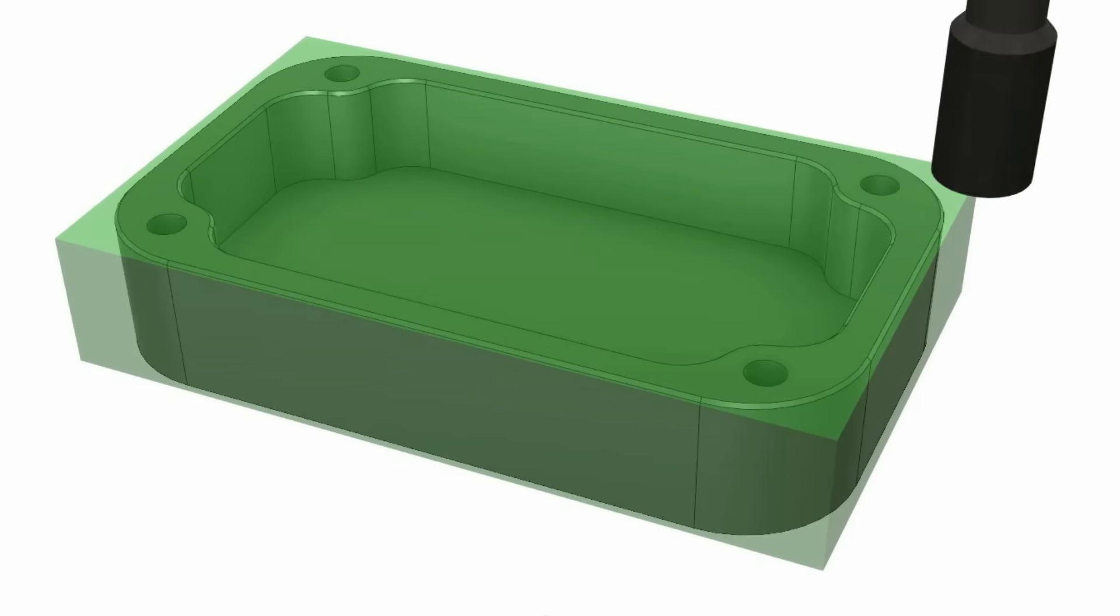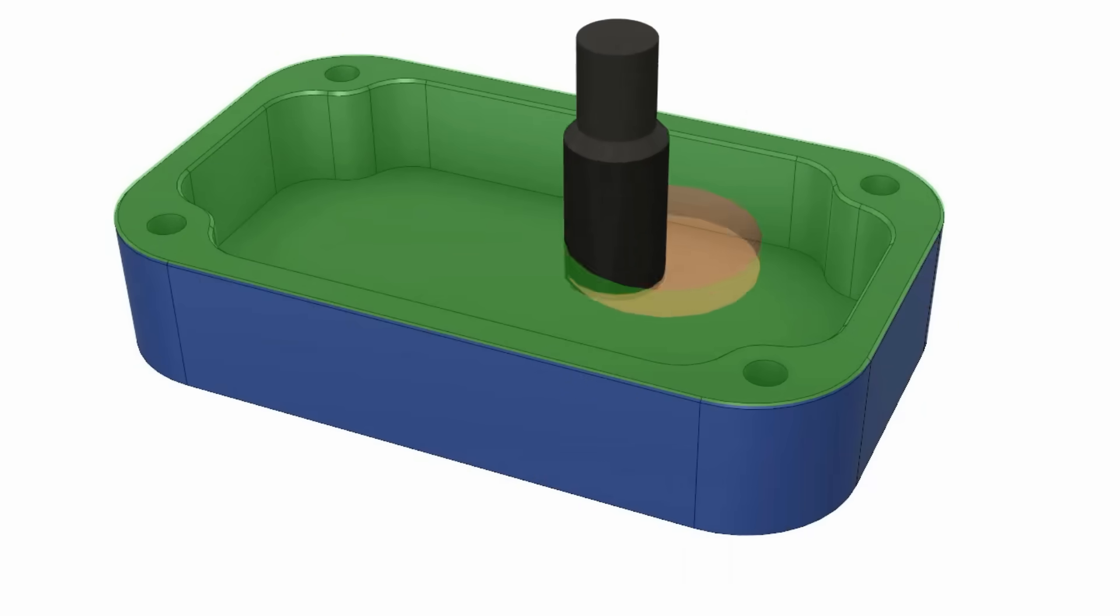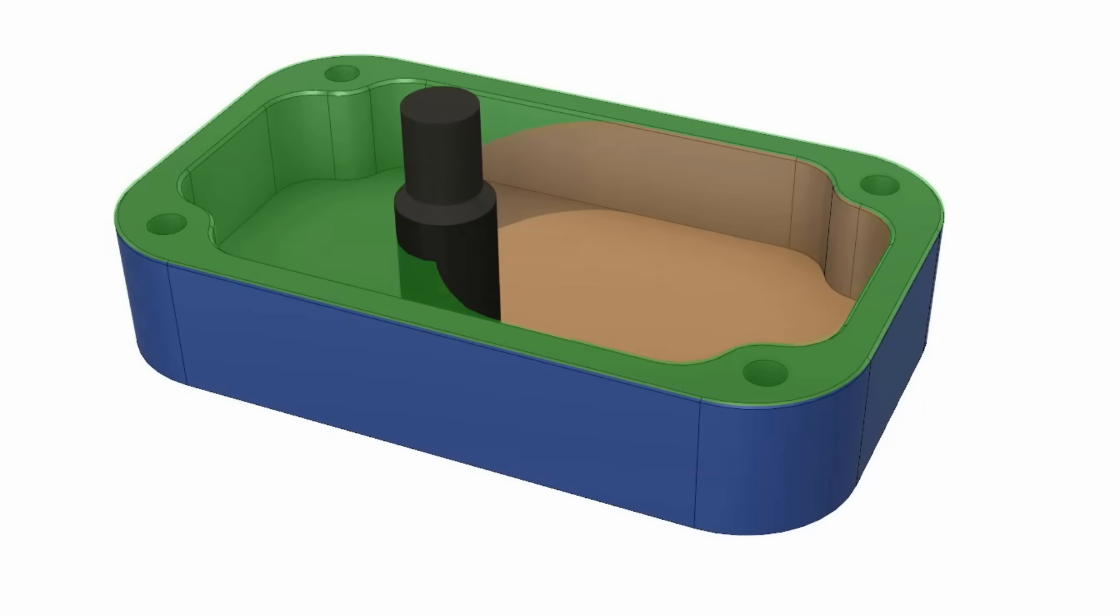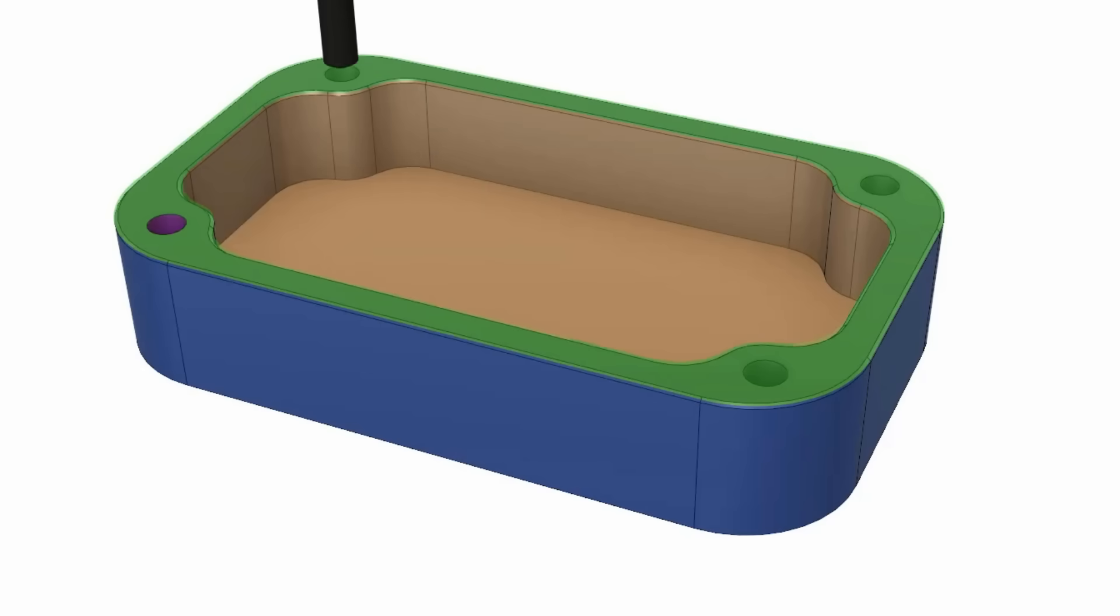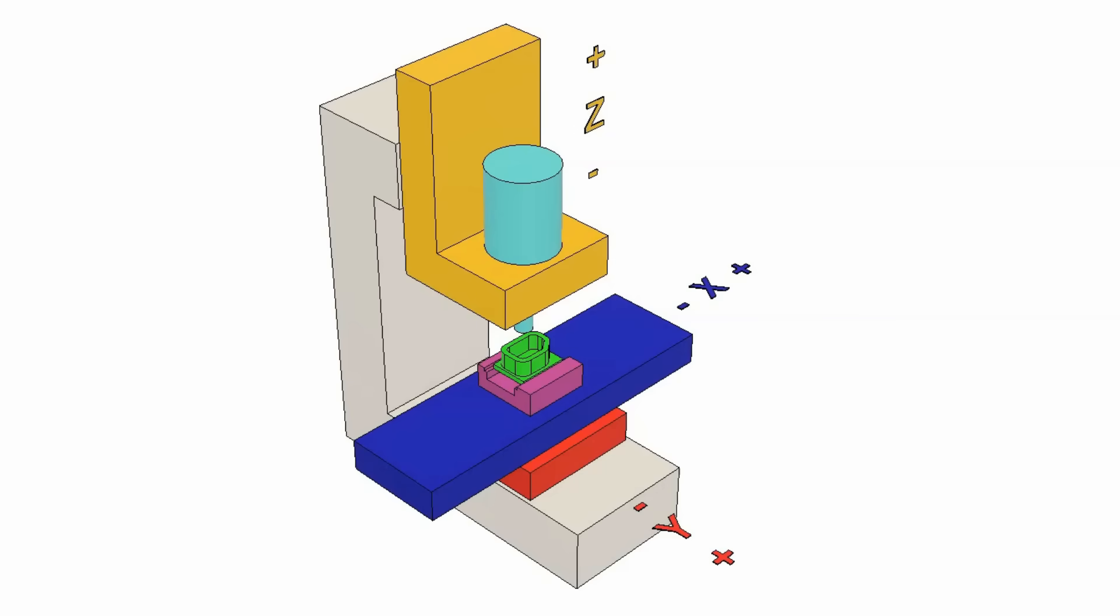A CNC milling machine is used to transform blocks of raw stock into finished parts by cutting away material in a subtractive manufacturing process. There are generally three axes to a milling machine: the x-axis which is left and right movement, the y-axis which is forwards and backwards movement, and the z-axis which is up and down.